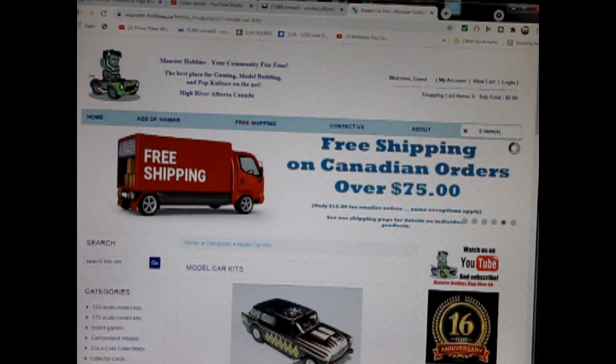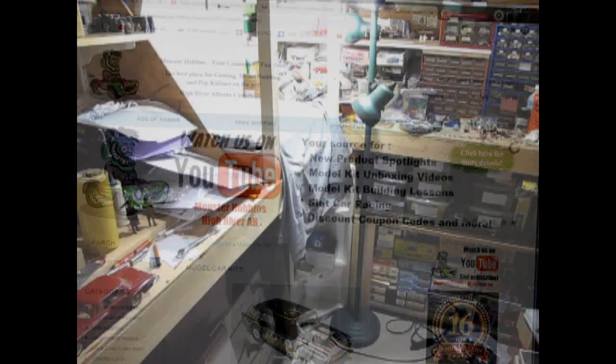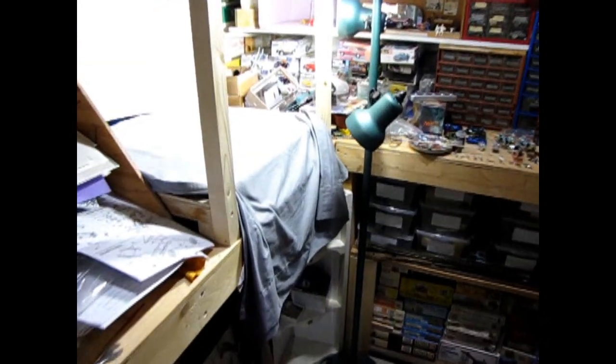What's in the box? Today we will be looking at the Type AG 1910 Paris Taxi. This model kit is from my own personal collection, however you can see all of our available model kits at www.monster-hobbies.ca. Now let's go down to our bench and see what's in the box.